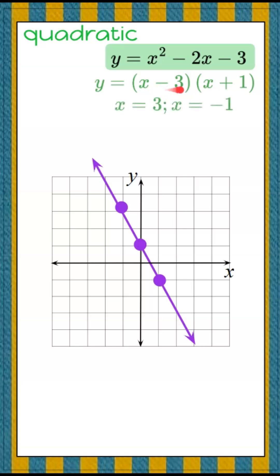When x minus 3 equals 0, I get x equals 3. When x plus 1 equals 0, I get x equals negative 1. So let's plot those.